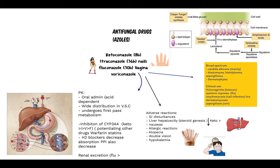In summary, azoles are among the best drugs to treat systemic mycosis. The most commonly used is ketoconazole, used for Candida albicans and vulvovaginitis. Fluconazole has wide distribution in the vagina and CNS. Itraconazole distributes to the nails, and voriconazole to the pleural space of the lungs. They are potent inhibitors of CYP3A4, potentiating drug effects of warfarin and statins, and have drug interactions with H2 blockers and PPI inhibitors.